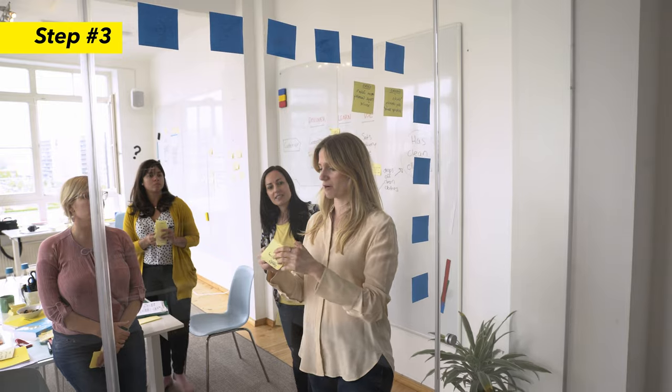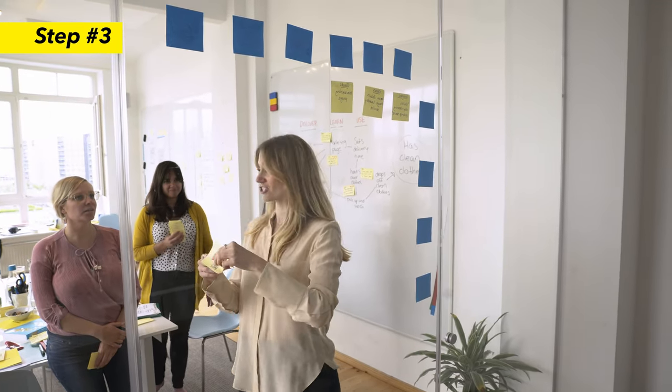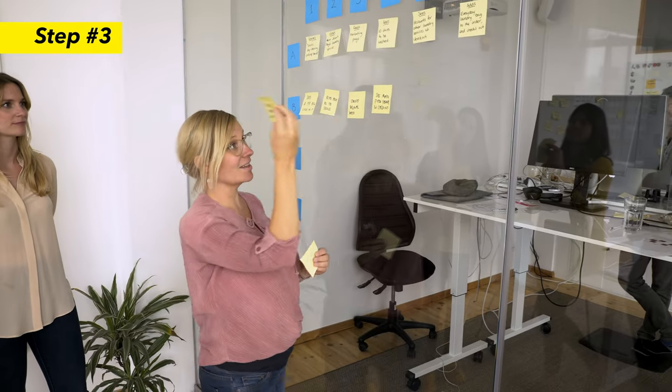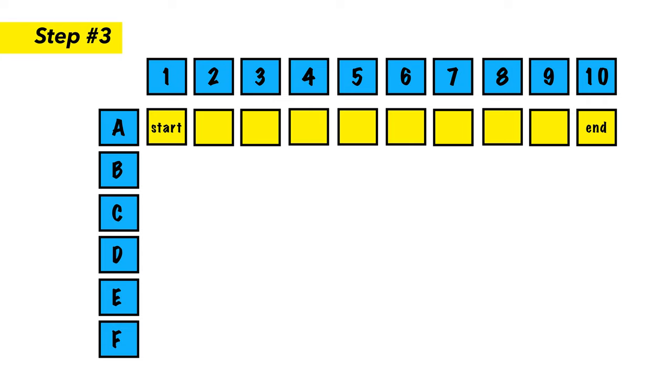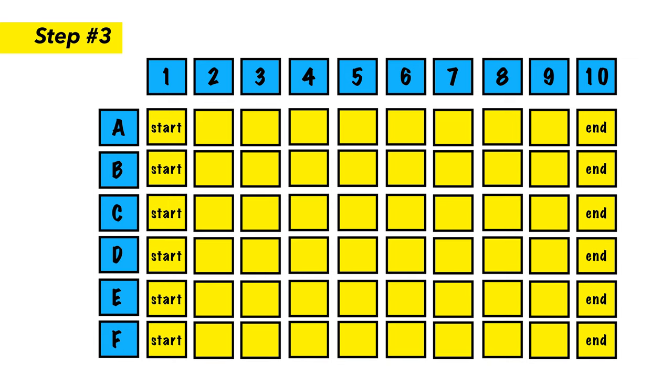Once the time is up, each participant should come to the board one by one and briefly explain the steps they created, and then put their sticky notes on the wall as well. Once everybody's done, you should have the steps like timelines in each row for each participant. As the facilitator, you'll see that because it's an interdisciplinary team with different background knowledge, these timelines will slightly differ.